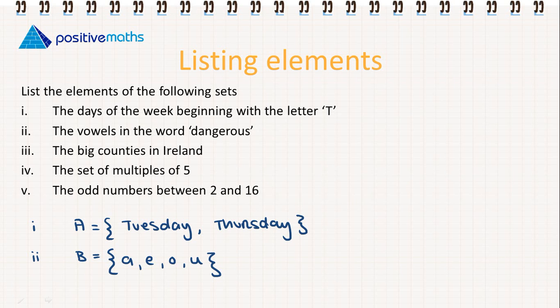Let's look at number three: the big counties in Ireland. This set — we don't know for definite what are the big counties in Ireland, because they haven't given us any further instruction. So we cannot list the elements for that set.